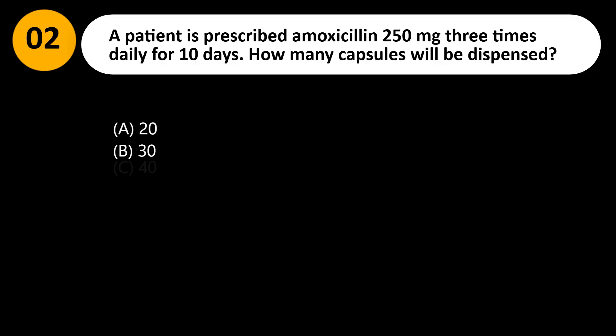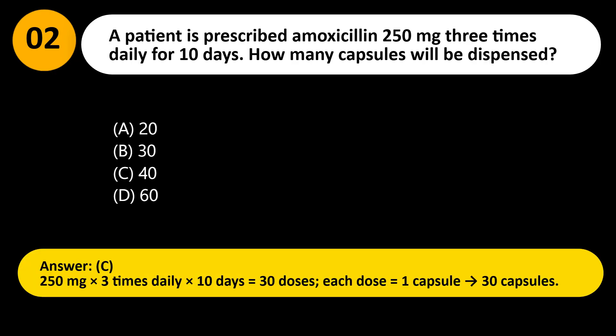A patient is prescribed amoxicillin 250 mg 3 times daily for 10 days. How many capsules will be dispensed? A. 20. B. 30. C. 40. D. 60. Answer: C. 250 mg times 3 times daily times 10 days equals 30 doses. Each dose equals 1 capsule — 30 capsules.